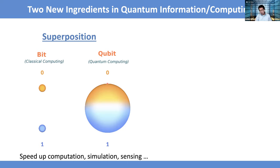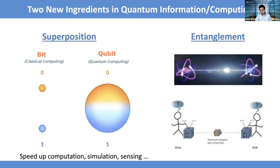The other ingredient is entanglement. One way to think about entanglement is that it is like a classical correlation, but it is ultra-strong. There is no classical correspondence to the entanglement that exists in the quantum world. A simple example: if you generate entangled photons, then if you measure one photon in horizontal polarization, you can immediately know that the other photon must be in vertical polarization.